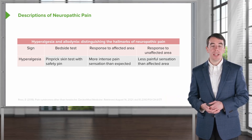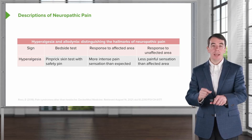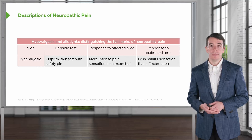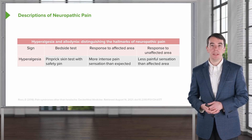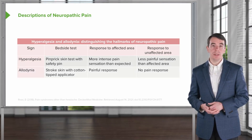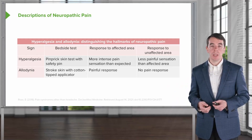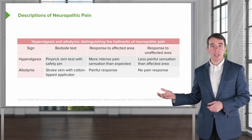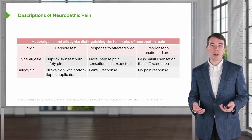For hyperalgesia, the bedside test is the pinprick skin test with a safety pin — take a small safety pin and prick over the surface of the skin. In patients with hyperalgesia, we'll hear descriptions of more intense pain than expected. In an unaffected area, there may be a less painful sensation, and we compare the response to that pinprick test. For allodynia, pain may be induced just by stroking the skin with a cotton tip applicator or the hand, producing a painful response to a non-painful stimulus. We see that painful response in the affected area and a normal response in the unaffected area.